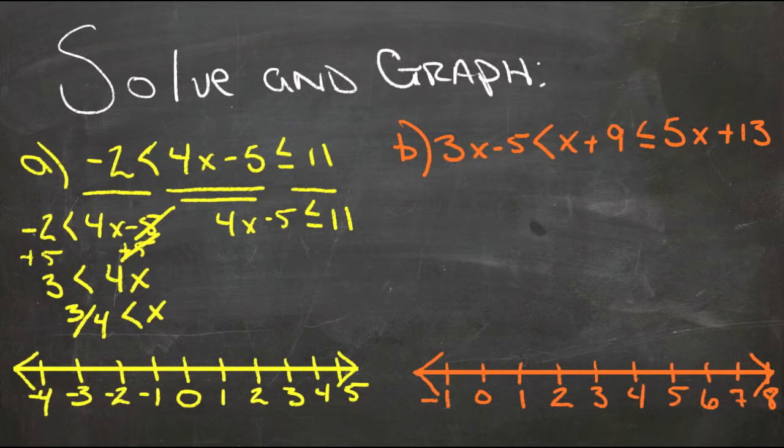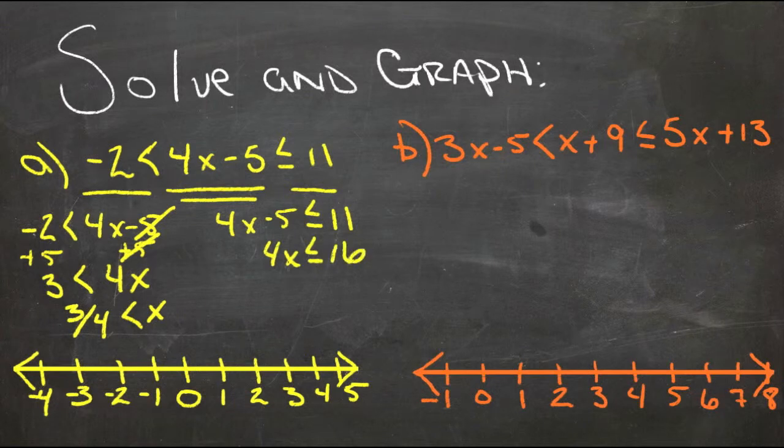Over here, we add 5 to both sides, we get 4x is less than or equal to 16, divide both sides by 4, and we get x is less than or equal to 4.